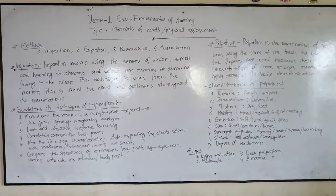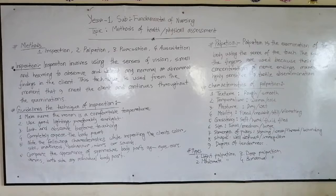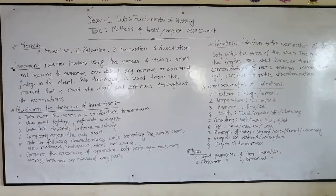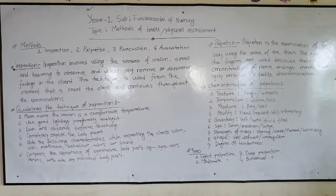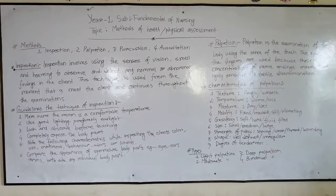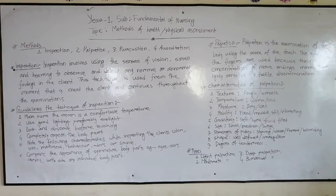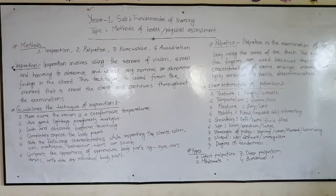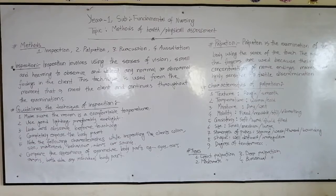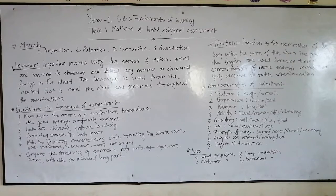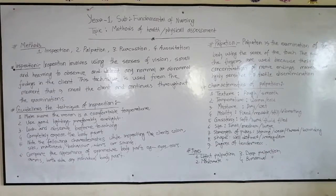Deep palpation should be used to a depth of 5 cm. This is used for the dominant part of the body. Bimanual palpation uses two hands, placing one on each side of the body part. It is used to assess organs such as the uterus, spleen, and liver — assessing size, consistency, and mobility of structures.